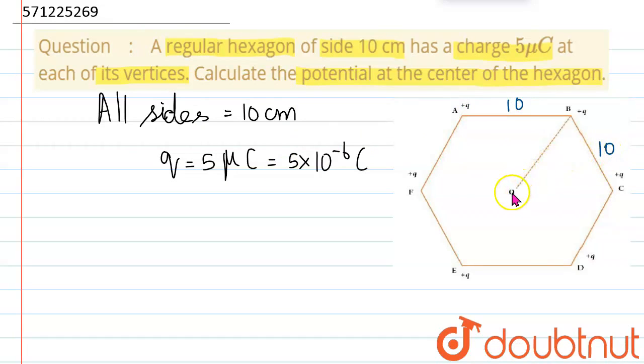The distance from the center to any vertex, which we can call OB, is also equal to 10 cm. Let's take this distance as D, which is 10 cm. Converting from centimeters to meters, we get D = 0.1 m.